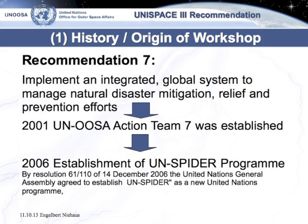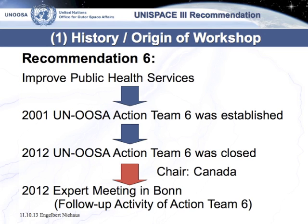Action Team 7 was established in 2001 and in 2006 became the UNSPIDER program by Resolution 61/110 on 14th December 2006 at the United Nations General Assembly. They agreed that UNSPIDER would focus on their recommendation as a program. In contrast to UNSPIDER, which is a United Nations program, Action Team 6 is in a transition period and is currently a member state activity.